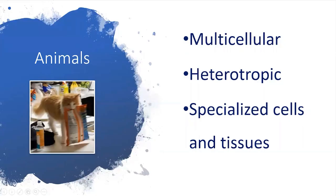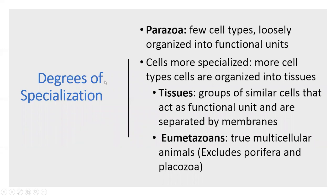Now that we've learned about all the different supergroups, let's talk about animals and animal development. Here are some traits all animals share: they're all multicellular, heterotrophic, they all have specialized cells, and some do have tissues. Parazoa — typically including sponges — have very few cell types and are loosely organized into functional units. Eumetazoans, meaning true multicellular animals, will have these tissues organized into more functional units separated by membranes.